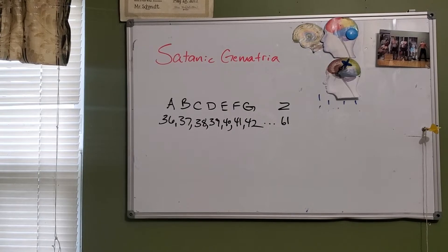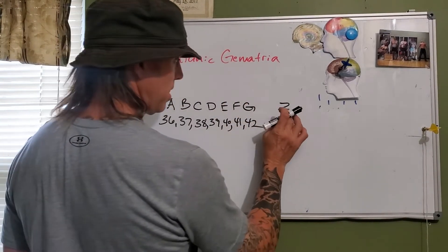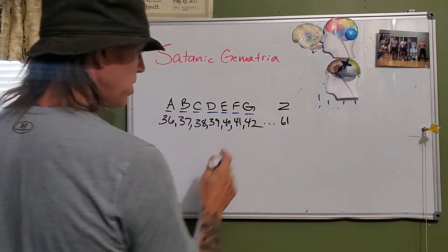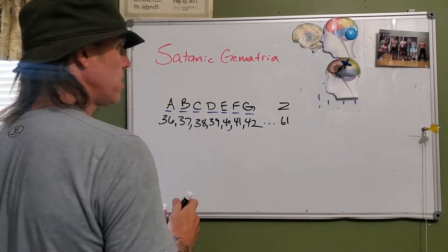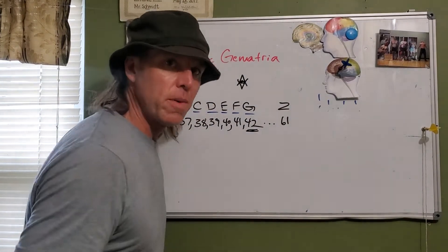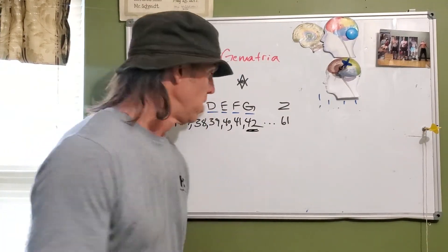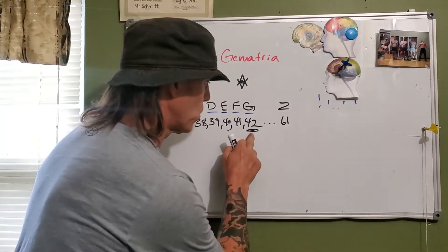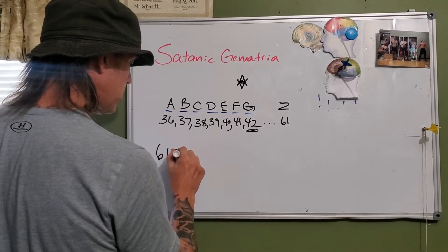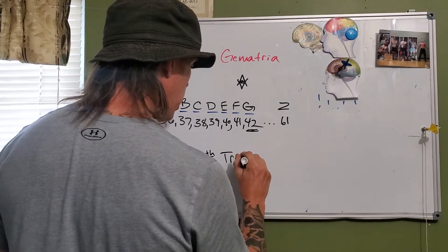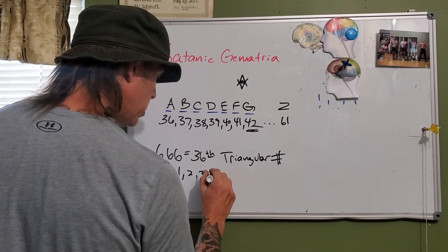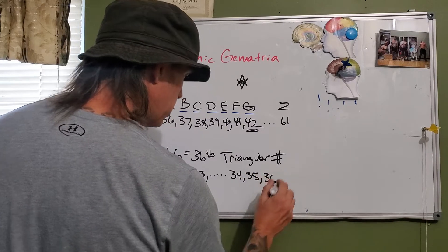Then you have reverse satanic gematria where Z is 161 and A would be at the end. Notice what G equals — it's 42. And in the middle of certain organizations there's a G right there. Martin's apartment number on the sitcom Martin was 42, Jackie Robinson's number was 42. And when we look at A being 36, 666 is the 36th triangular number.